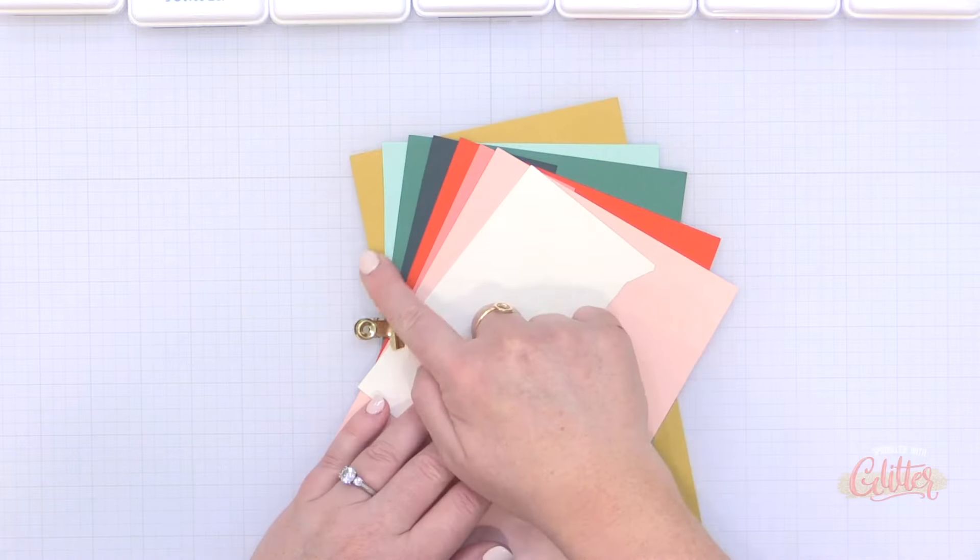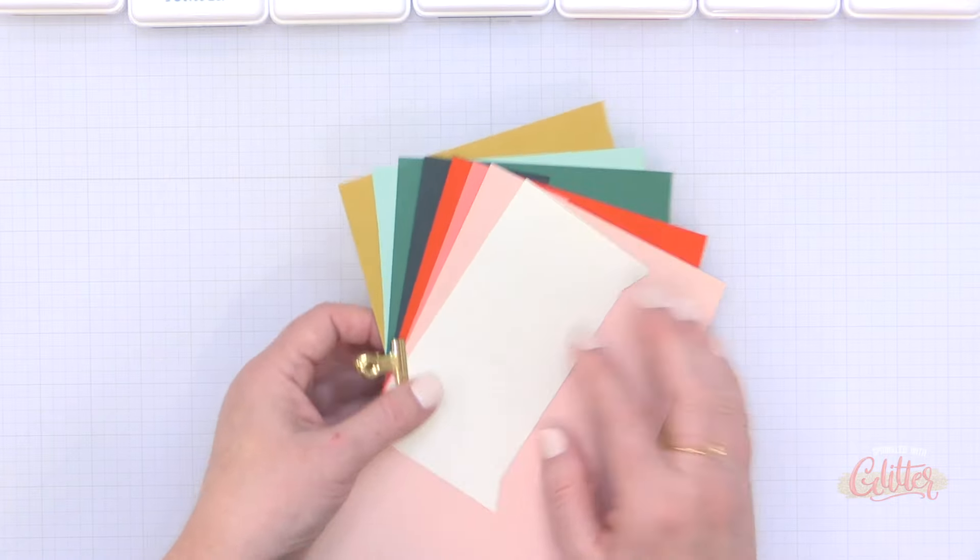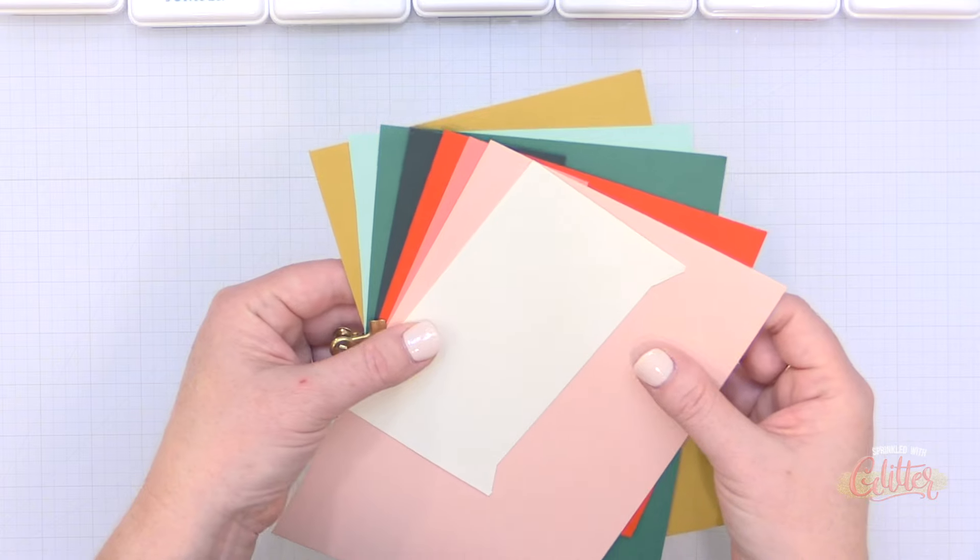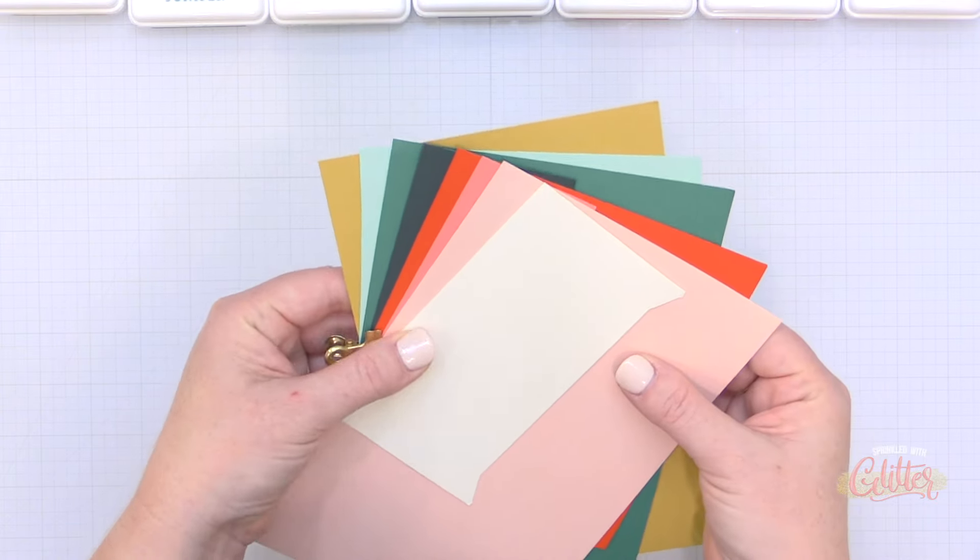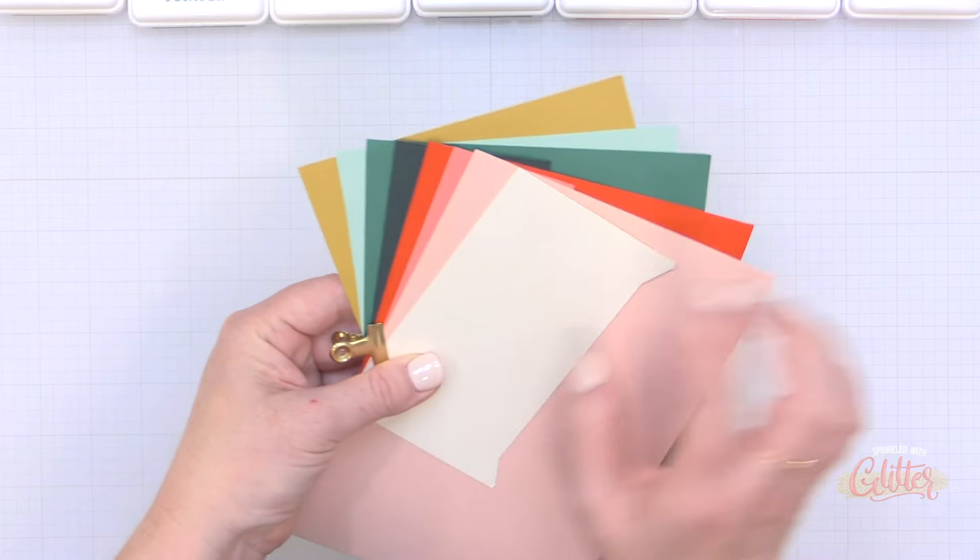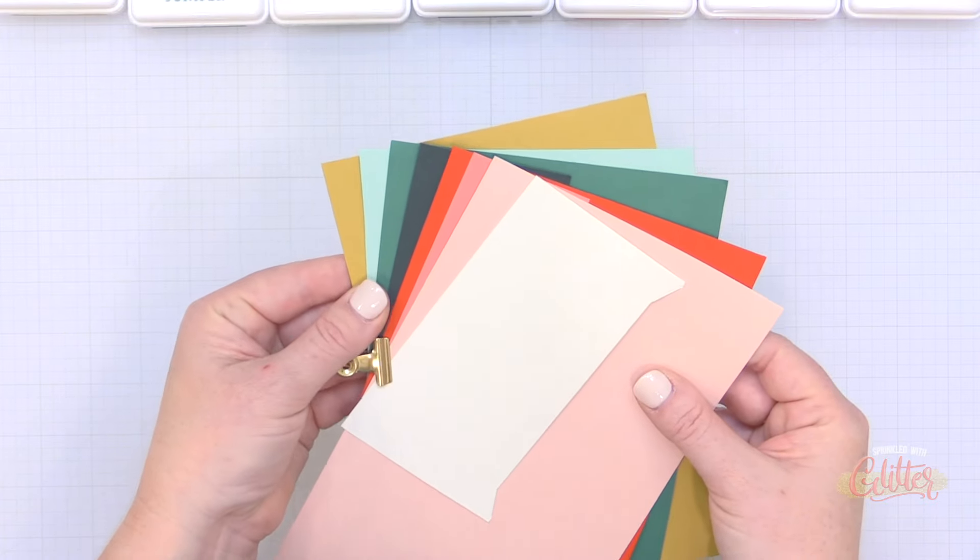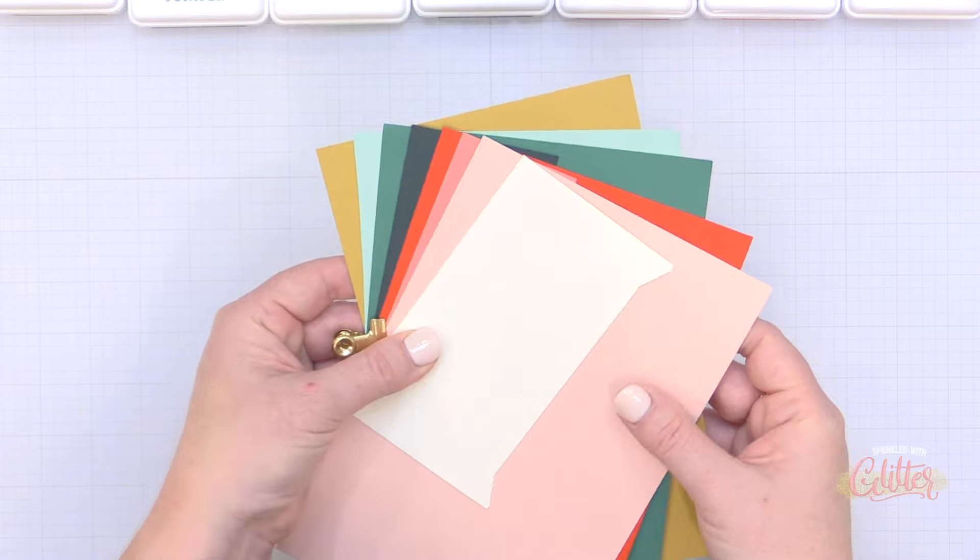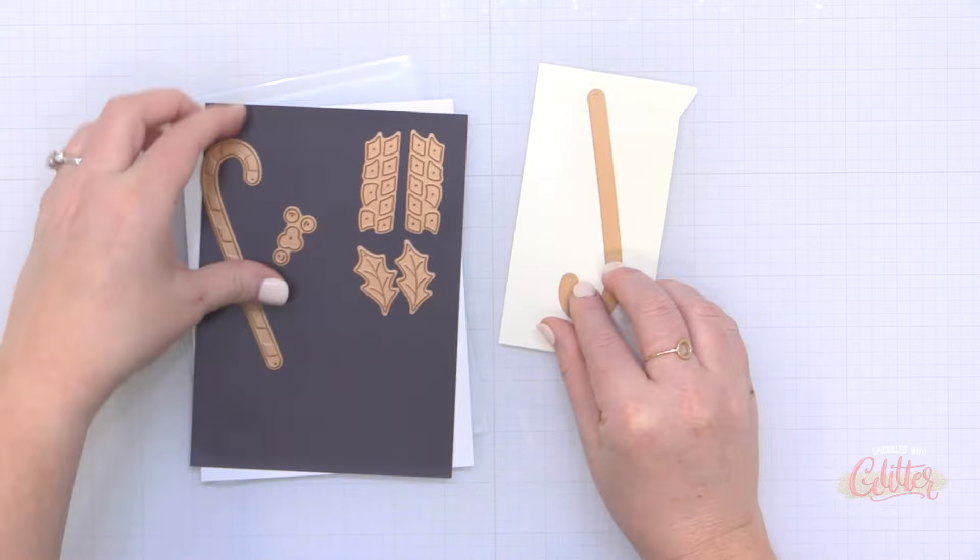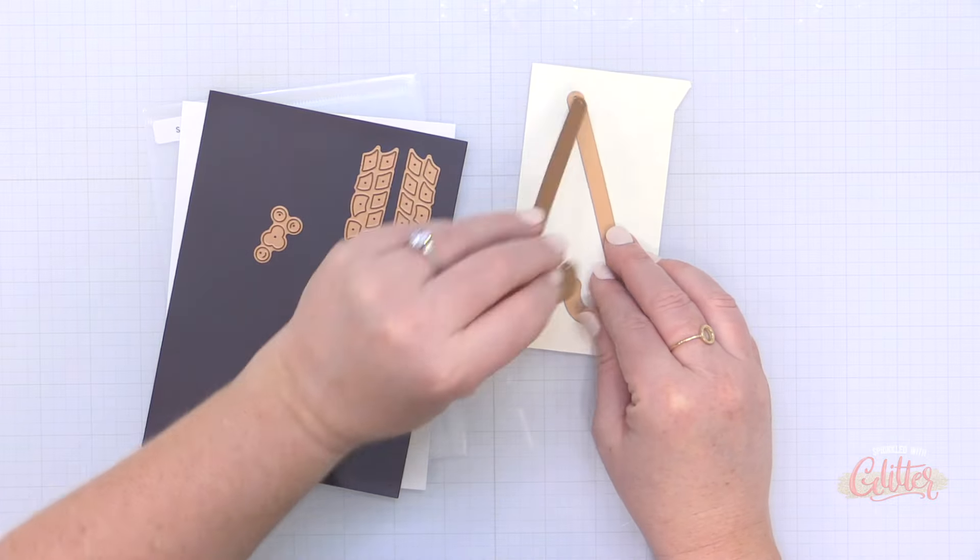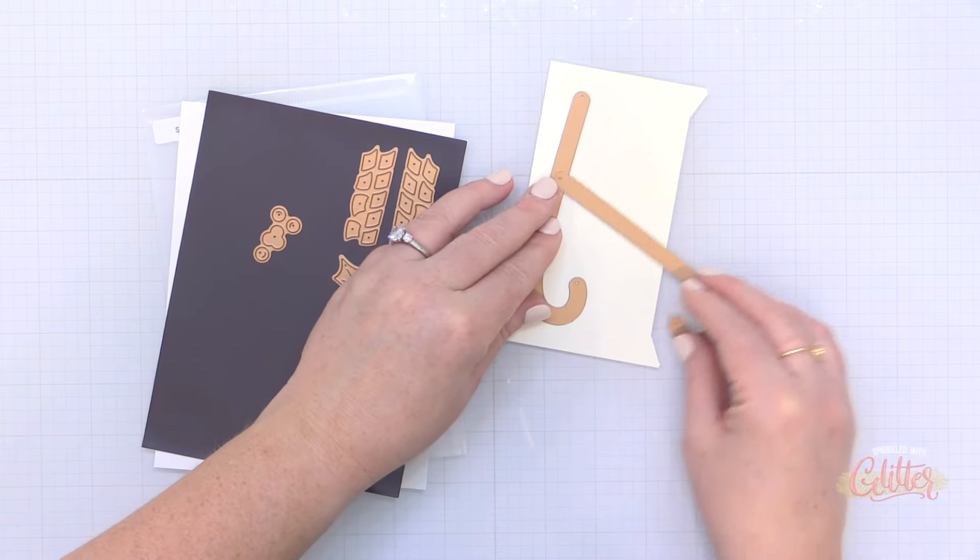Now this palette here is going to be my go-to holiday palette for 2024 and it includes some Concord and Ninth colors as well as an ivory cardstock. I have some Ballet Slipper and Watermelon, Poppy, Rainforest, Juniper, Sea Glass, and Stardust, and these colors look so wonderful together. I love that there's a lot of pink and those blue greens for the holiday season.